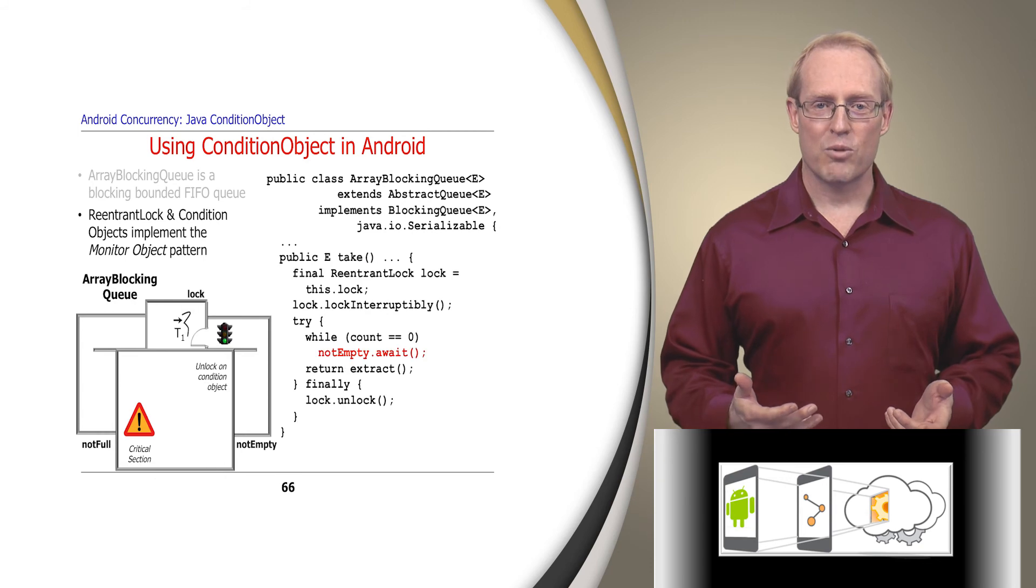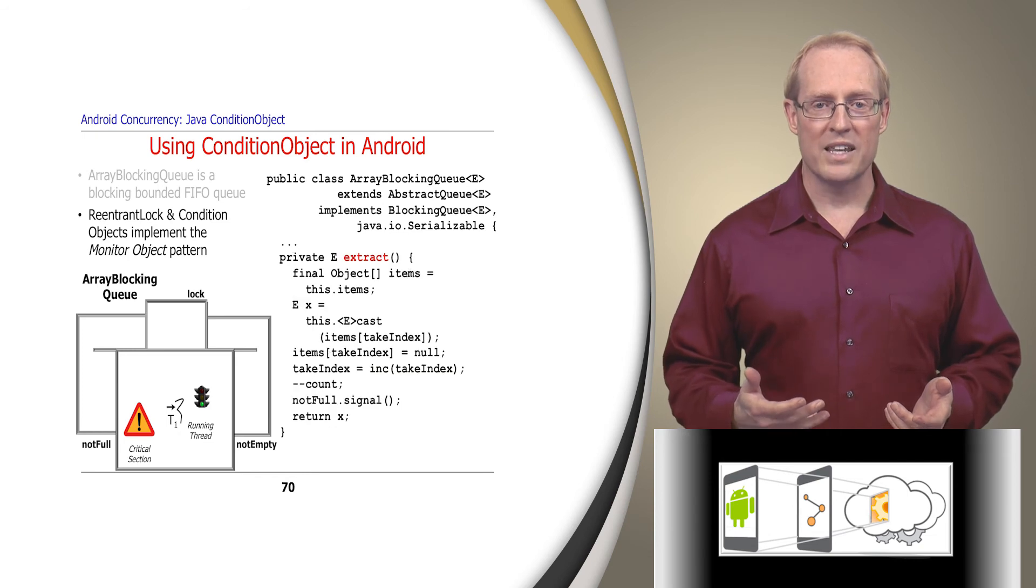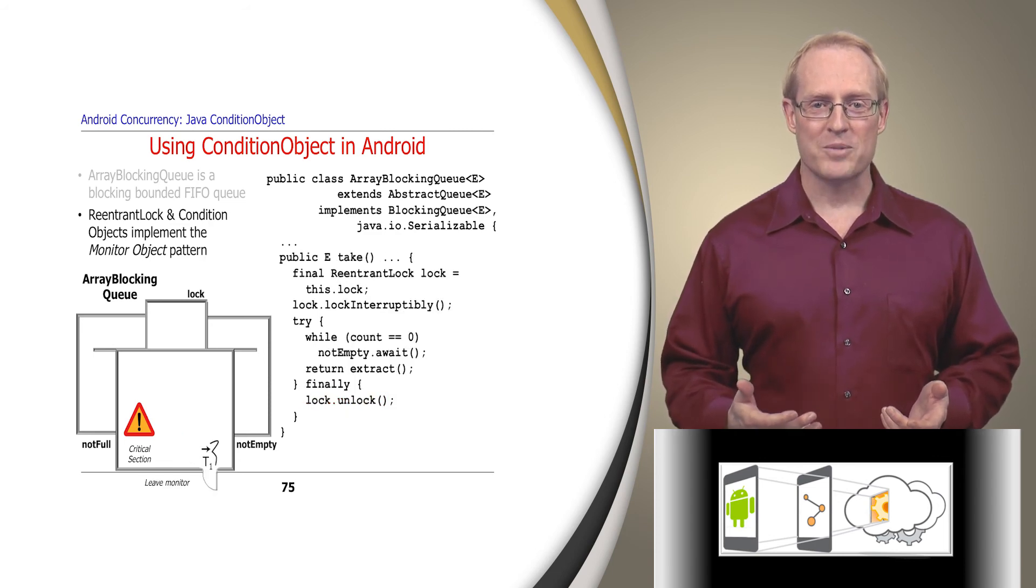At this point, thread T1 is reawakened from its wait on the not empty condition object in the take method, acquires the lock, and continues running in the take method, where it determines that the queue is no longer empty and calls the extract method. Extract removes the head element in the items array, signals any threads waiting on the not full condition object to indicate the queue is no longer full, and returns the element back to the take method, which then releases the lock and leaves the monitor object.